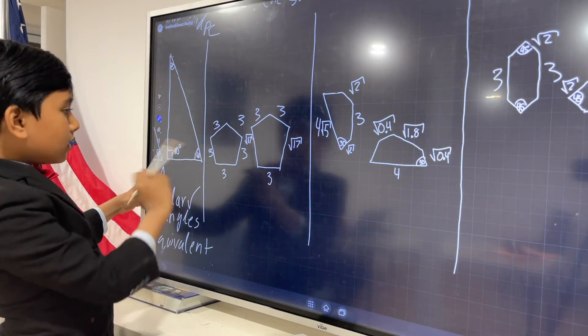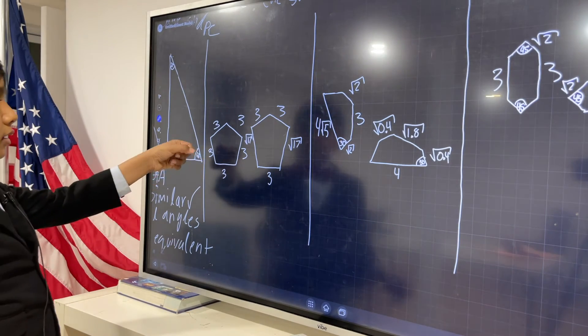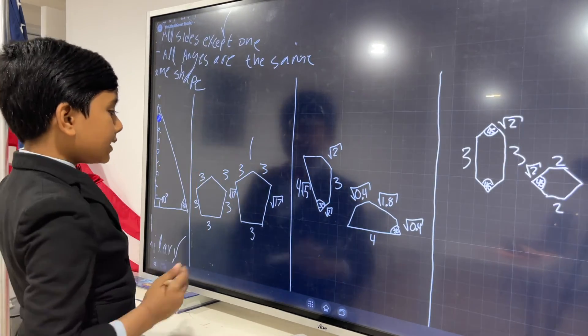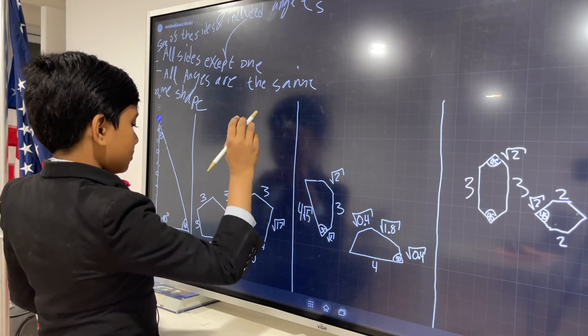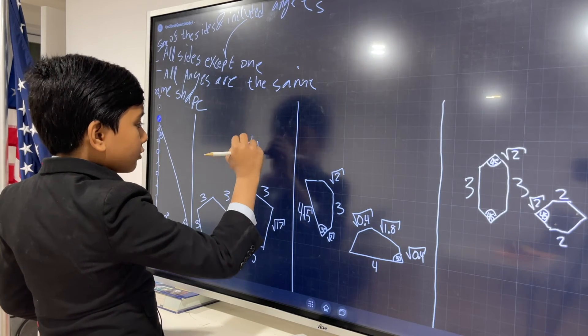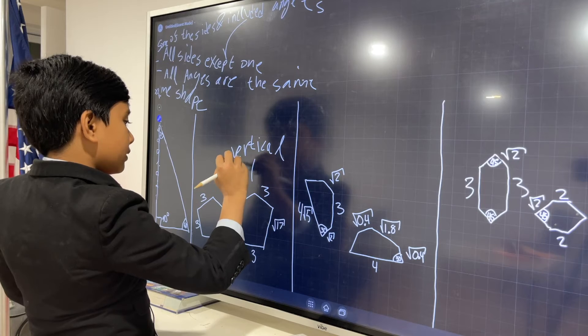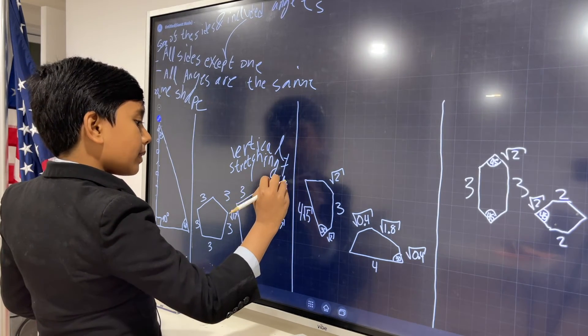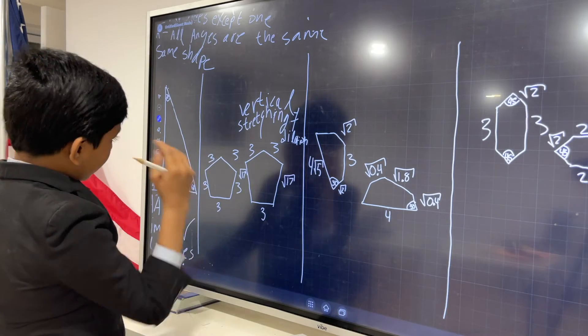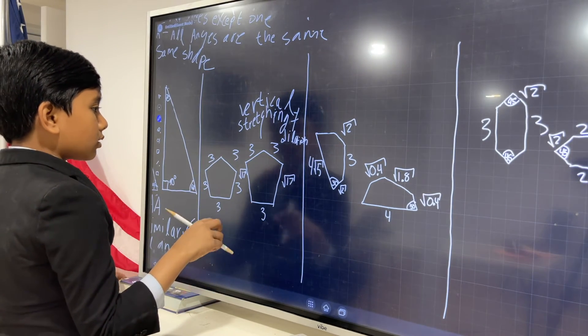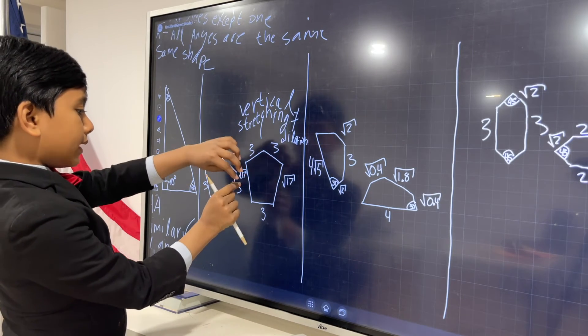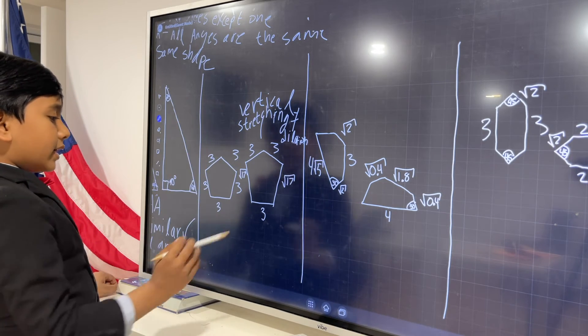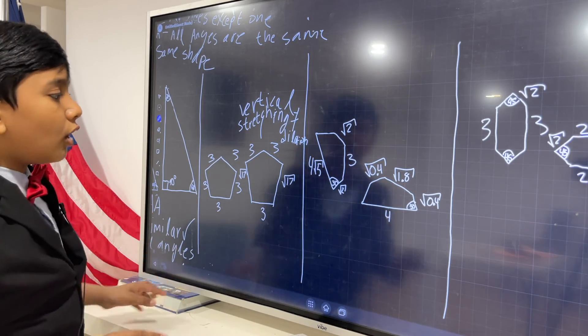Now over here it might look like these two are similar, since one is a pentagon and the other just a sized up pentagon, but if you look closely you will notice that this is actually just a vertical stretching, which we learned about in our transformation video. And vertical stretching is not equal to dilation.